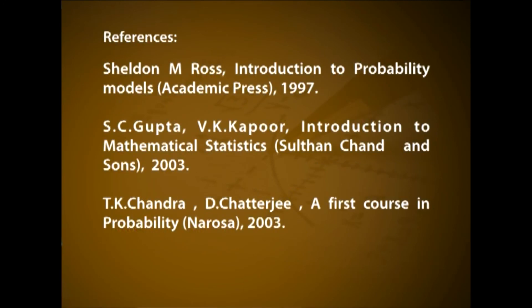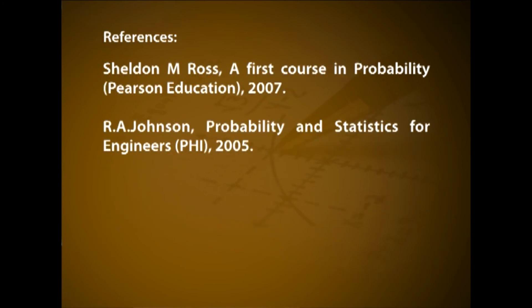The books for your reference are: Introduction to Probability Models by Sheldon M. Ross, Academic Press, 1997; Introduction to Mathematical Statistics by S.C. Gupta and V.K. Kapoor, Sultan Chand and Sons, 2003; A First Course in Probability by T.K. Chandra and D. Chatterjee, Narosa, 2003; A First Course in Probability by Sheldon M. Ross, Pearson Education, 2007; Probability and Statistics for Engineers by R.I. Johnson, PHI, 2005. Hope the session was useful for you. See you next time. Goodbye.